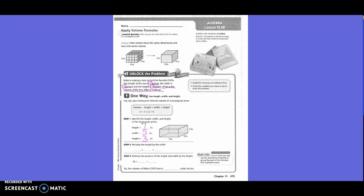Multiply the length by the width. So 7 times 5 equals 35. Multiply the product of the length and the width by the height. So 35 times 3 equals, 5 times 3 is 15, put a 5, eventually carry the 1, 3 times 3 is 9, plus 1 is 10. So the volume of Mike's DVD box is 105 cubic inches, or inches cubed.